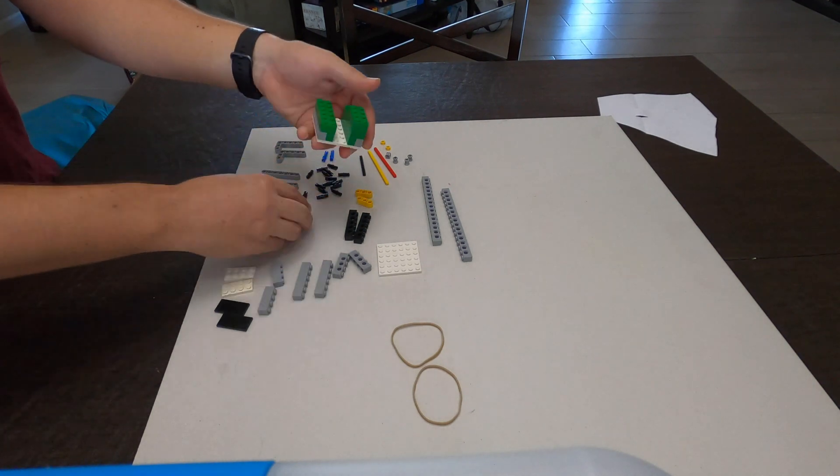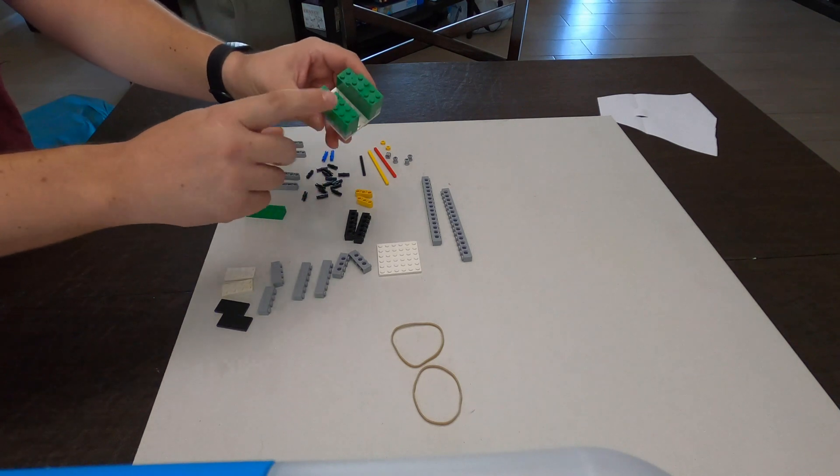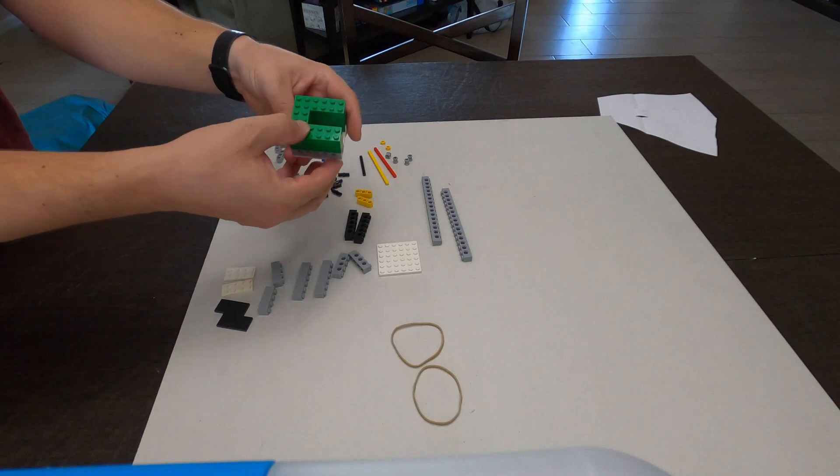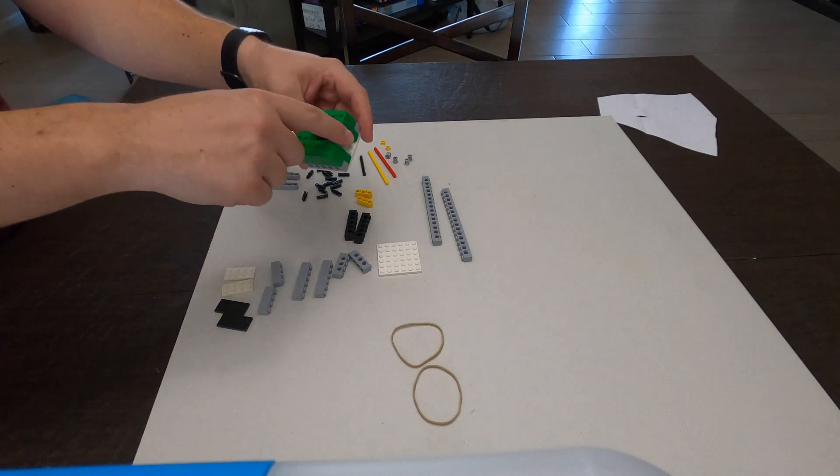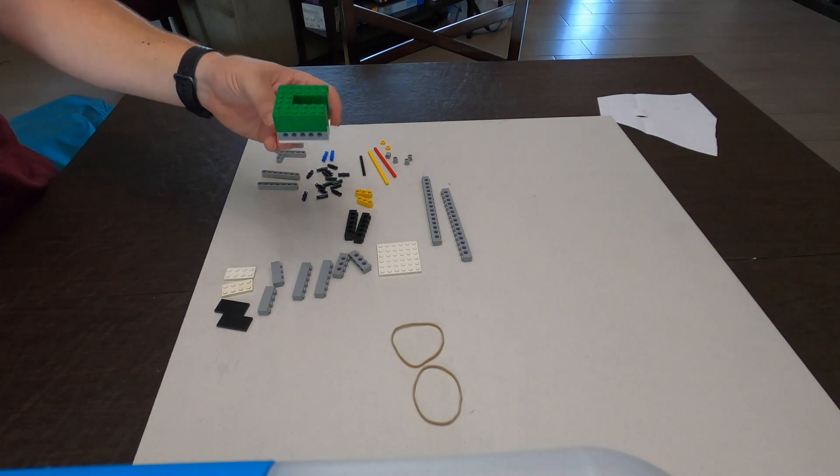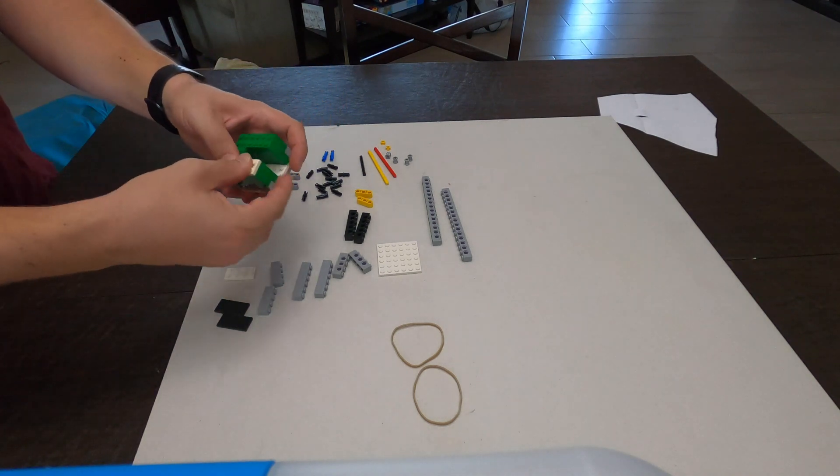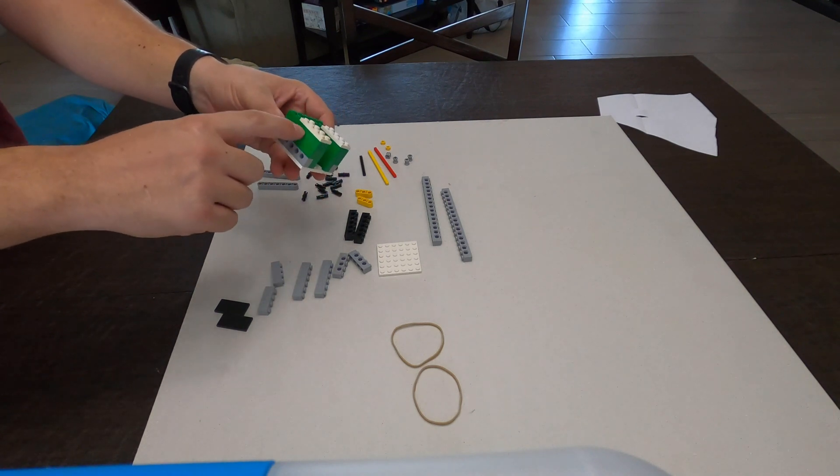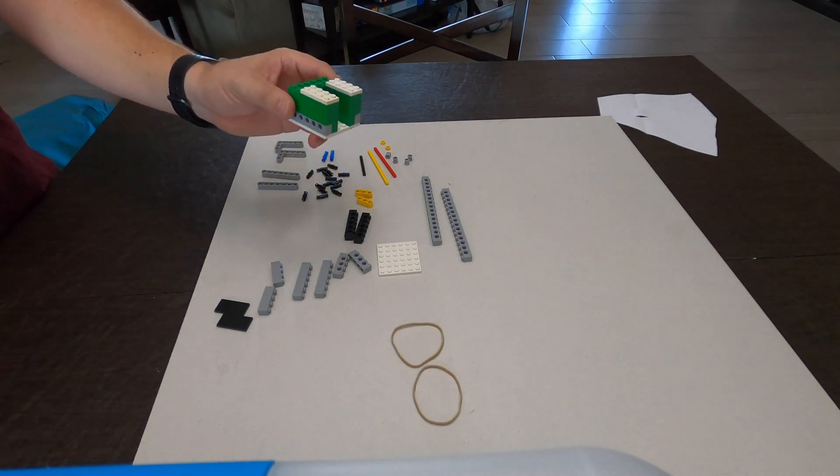Now we're going to take our 2x4s, we're going to put those on one end and then we're going to take that 2x6 brick and we're going to put it on the other end. So we have one end that's open and one end that's covered by this 2x6 brick. We're going to put on our plates, our 2x4 plates, and those go right on top of the 2x4 bricks.